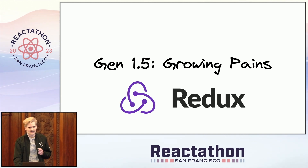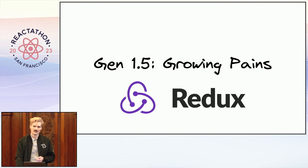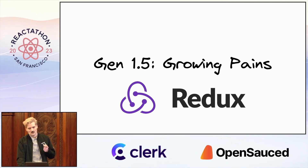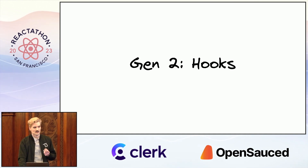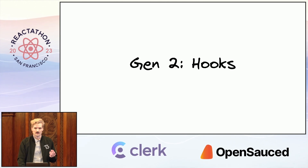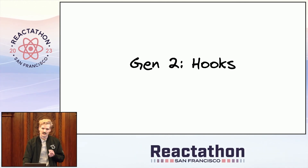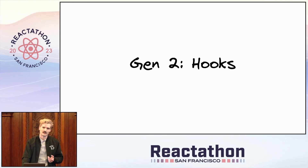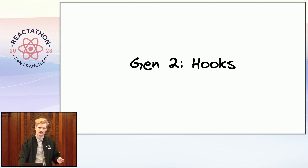I think React understood this and they listened, paid close attention to the community and worked with us, which is why we saw such a huge shift with hooks. The value of hooks wasn't just that you could write your state in an easier way — it was deeper than that. State now had its own level of composability, its own primitives. For the first time, you could npm install state, not just components.